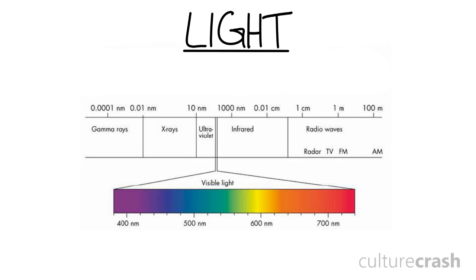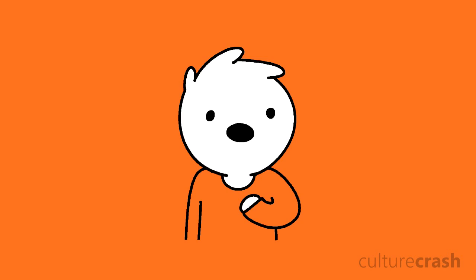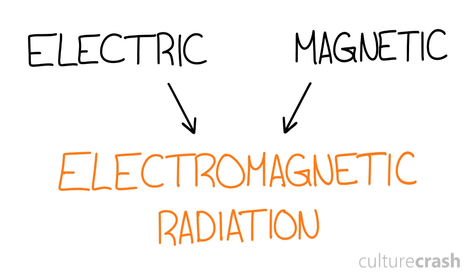Light is a type of electromagnetic radiation which has a wavelength in the visible spectrum. Radiation is essentially formed when an atom's electrons drop down an energy level or orbital, thus releasing energy. This energy has both electric and magnetic wave components travelling perpendicular to one another, making it electromagnetic radiation.